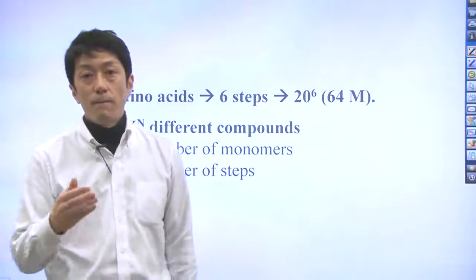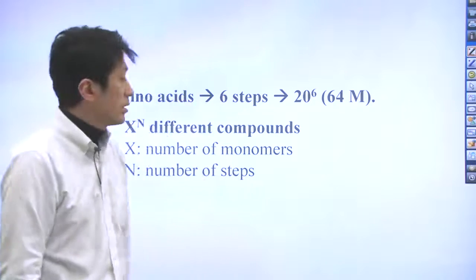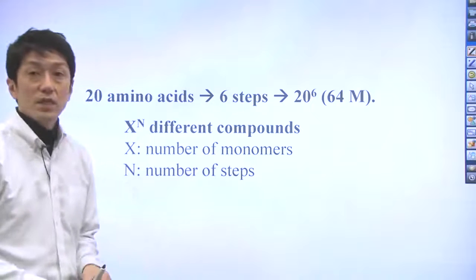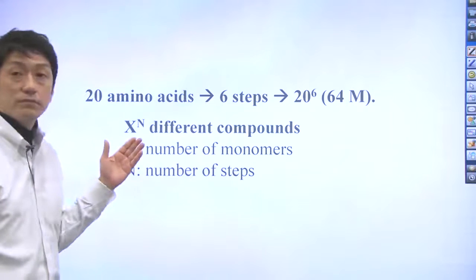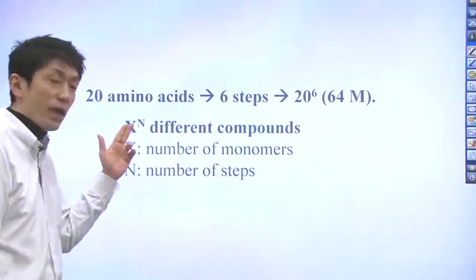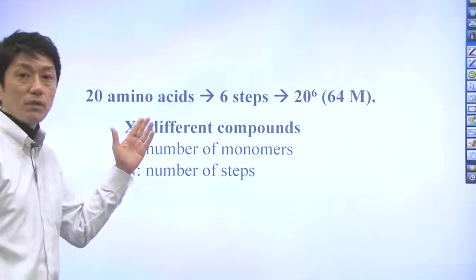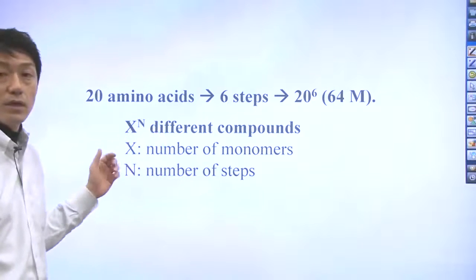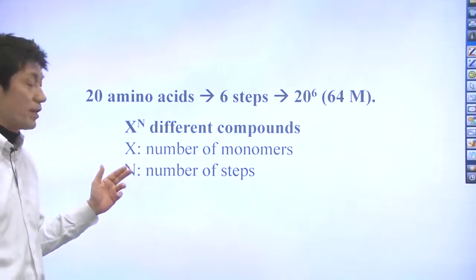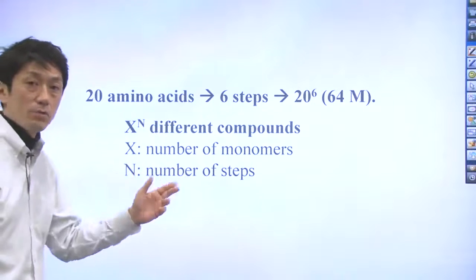By the one bead, one compound method or split pool synthesis, you can generate X to the power of N compounds, where X is the number of monomers and N is the number of steps.